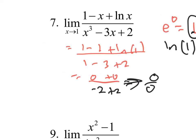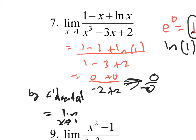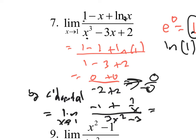By L'Hôpital's Rule, this equals the limit as x approaches 1. Derivative of the top: derivative of x minus 3x plus 2 — wait, that's a negative 1 plus the derivative of natural log x, which is 1 over x. All over the derivative of x cubed minus 3, which is 3x squared minus 3.